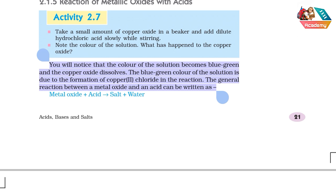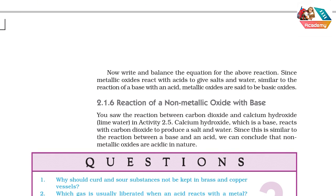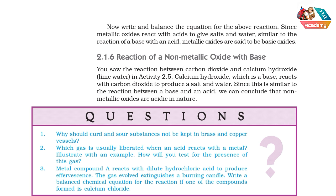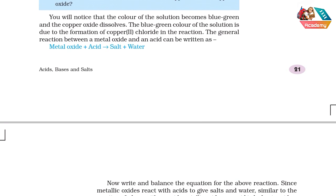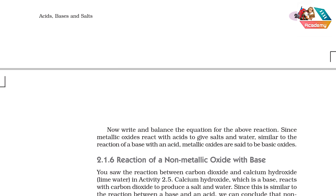The general reaction between a metal oxide and an acid can be written as: metal oxide + acid → salt + water. When you react a metal oxide with acid, salt and water are formed. Metallic oxides are said to be basic oxides, similar to the reactions of a base with an acid.